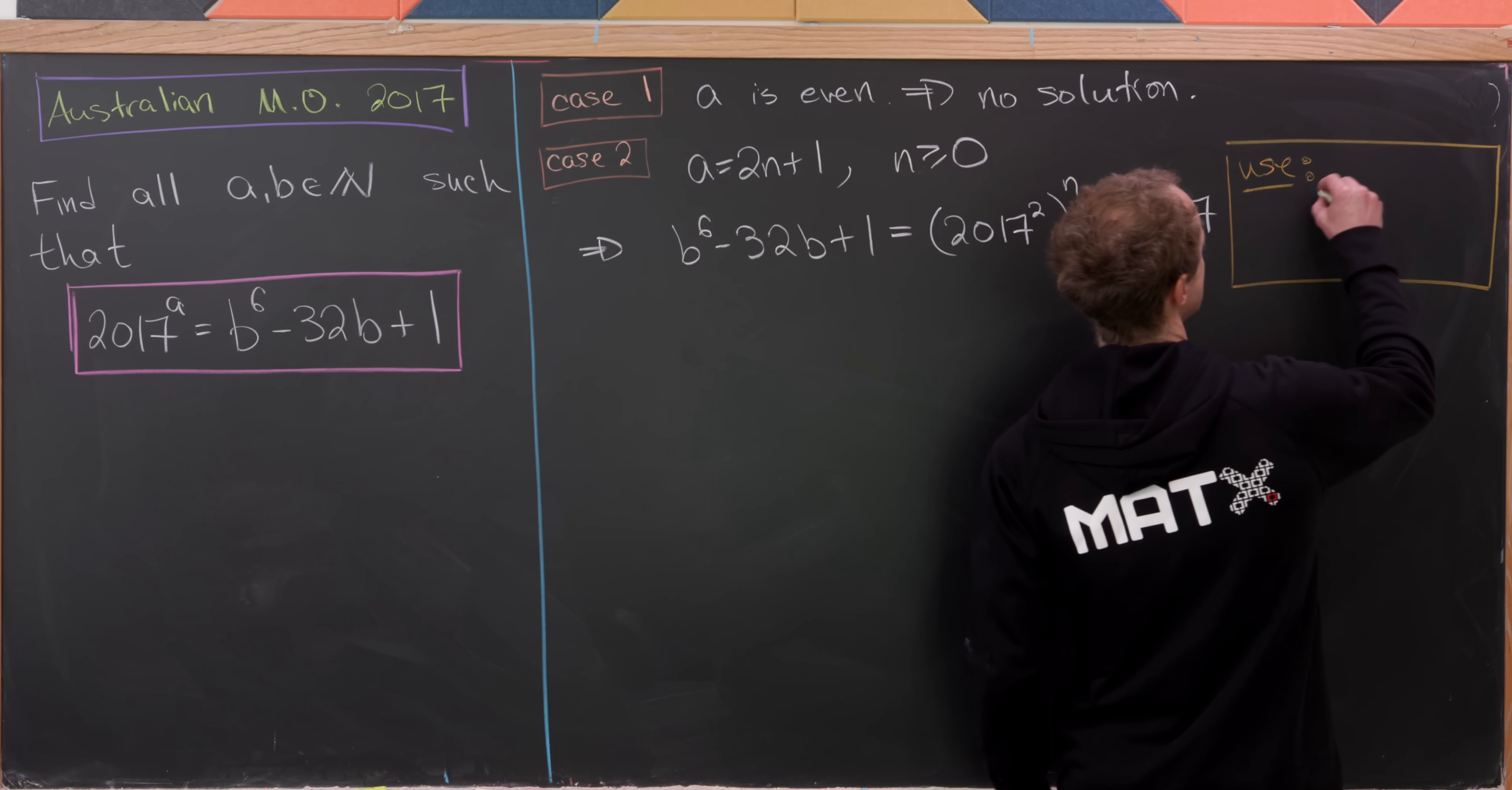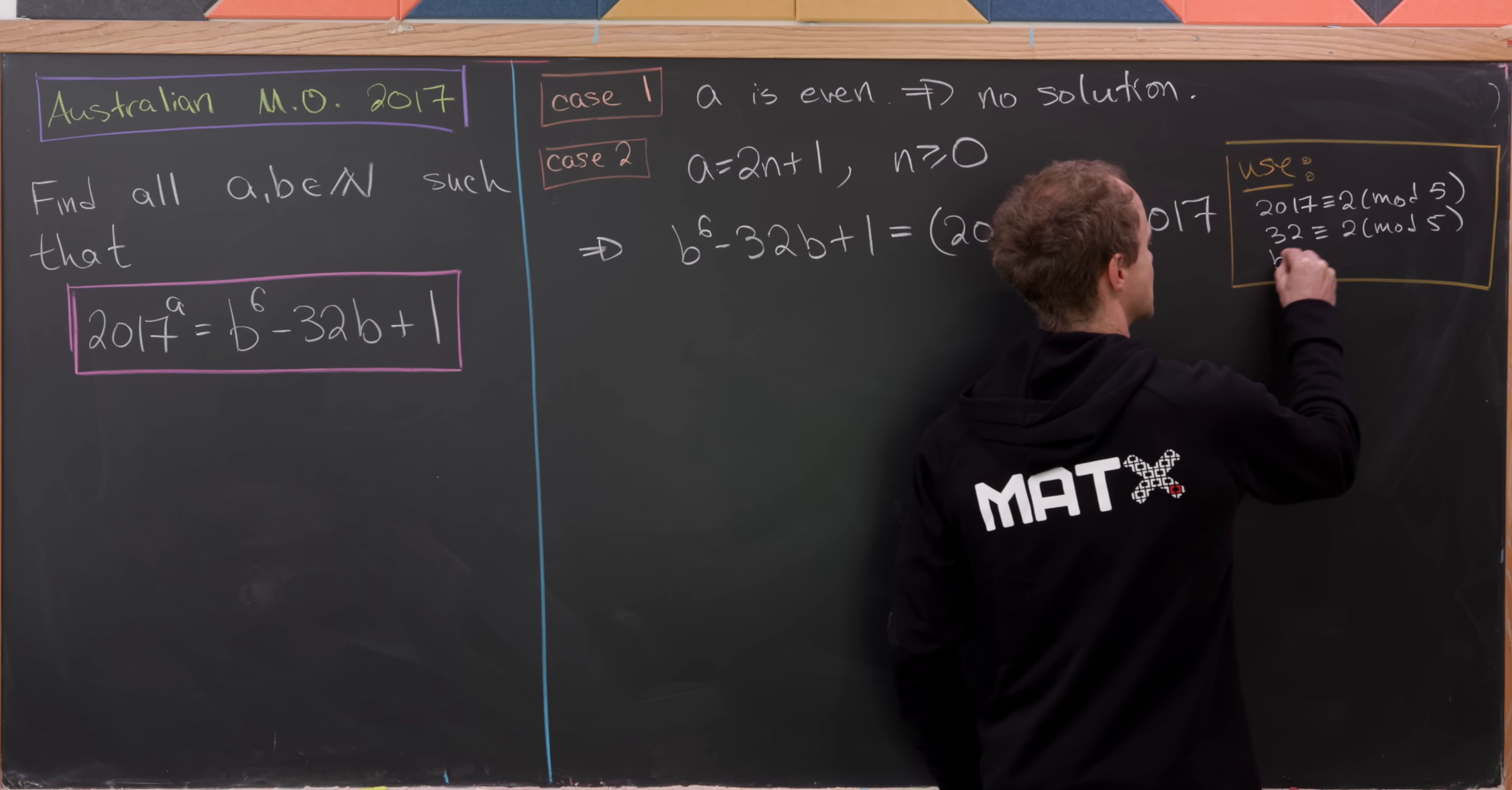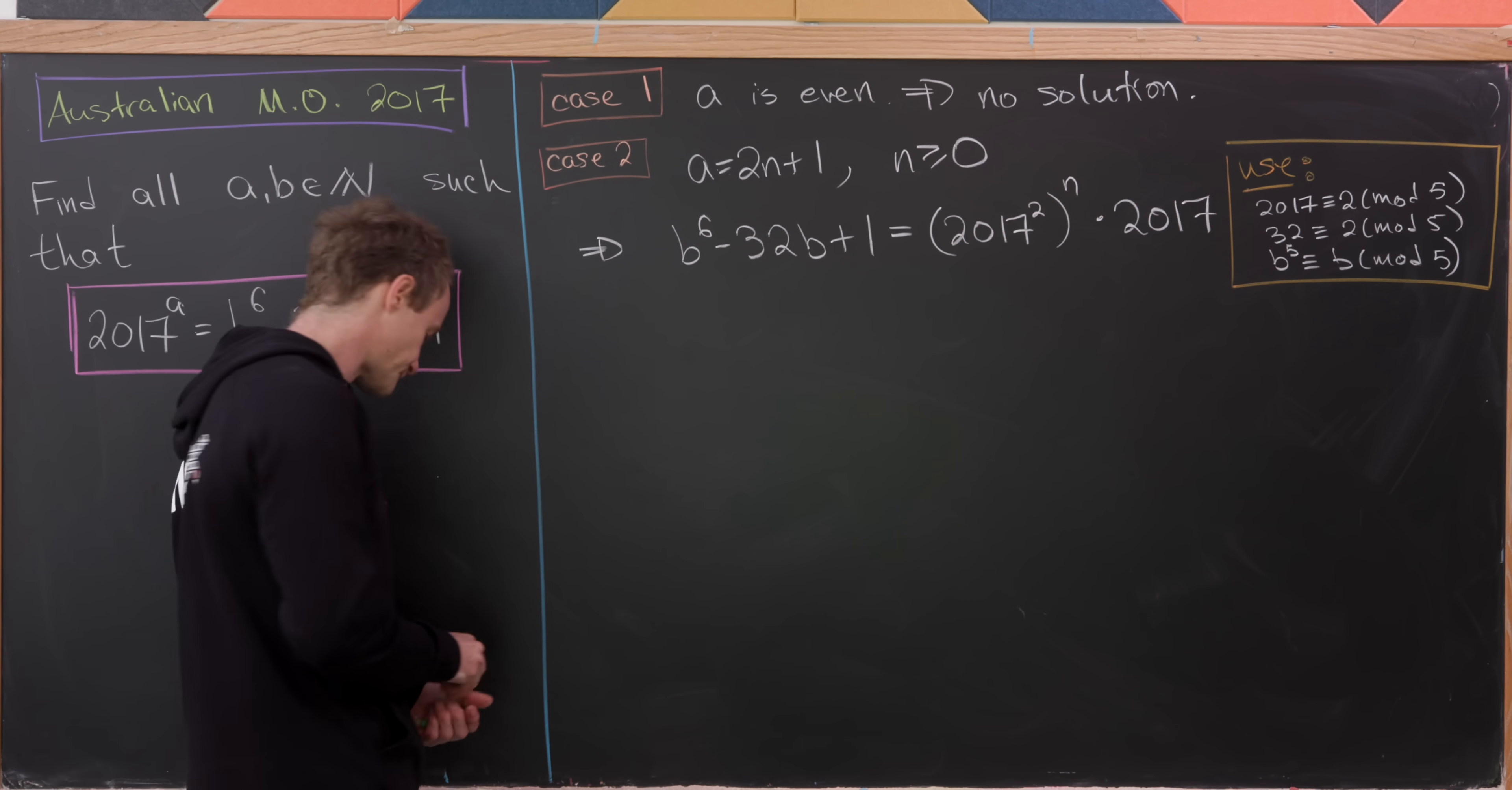So here we're going to use the fact that 2017 is congruent to 2 mod 5. 32 is congruent to 2 mod 5. And then nominally, B^5 is congruent to B mod 5. But if B^5 is B, then B^6 is going to be B^5 times B or B^2. And of course, that last line is by Fermat's little theorem.